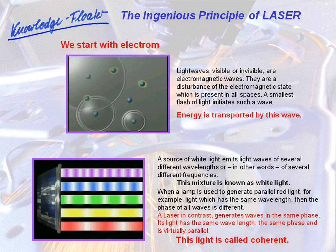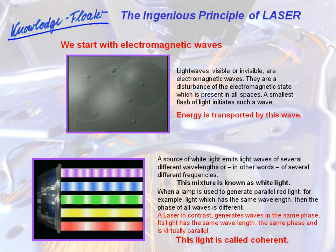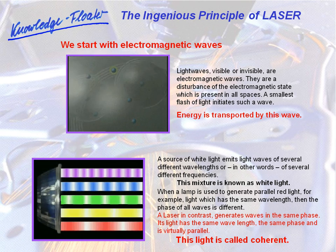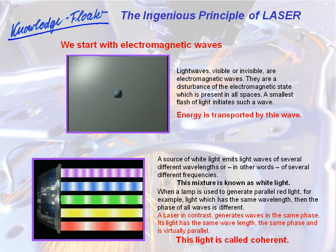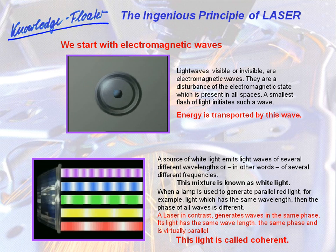We start with electromagnetic waves. Light waves, visible or invisible, are electromagnetic waves. They are a disturbance of the electromagnetic state which is present in all spaces. The smallest flash of light, a quantum, generates such a wave. Energy is transported by this wave.